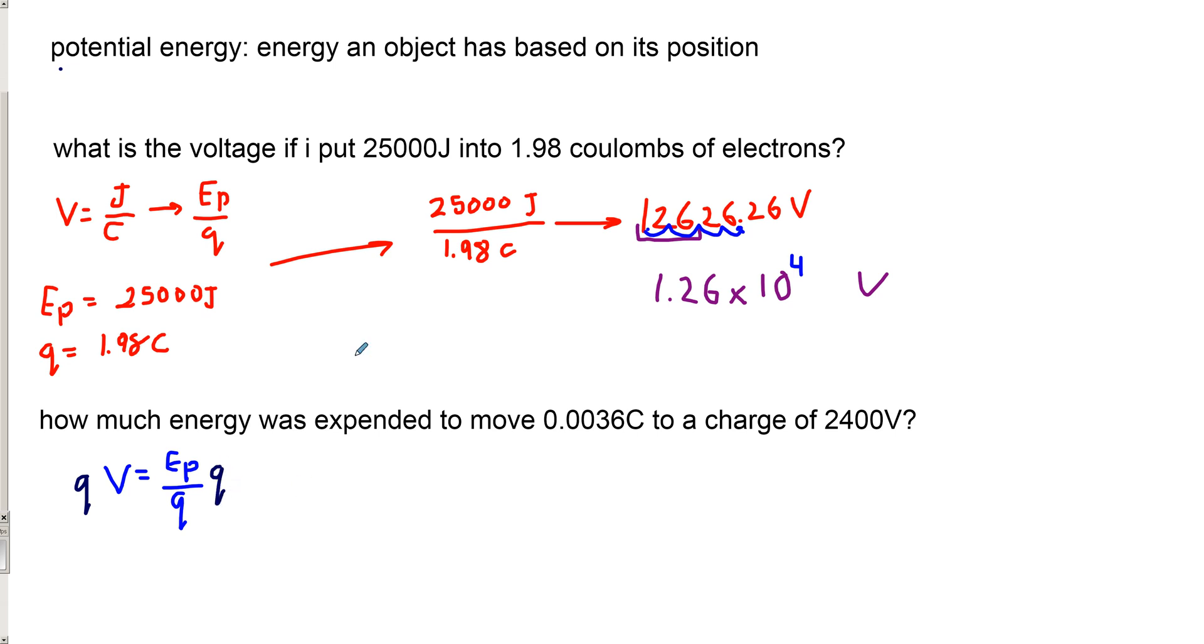Why is that? Well we cancel out q on that side, it's moved to the other side. So we have qV equals Ep, energy potential. So we got the energy all by itself. Remember that's the fundamental of these questions, is you want to be able to get a particular number all alone so that when we solve it we have the answer on one side. And it's always always always better to do it before you start plugging numbers in.